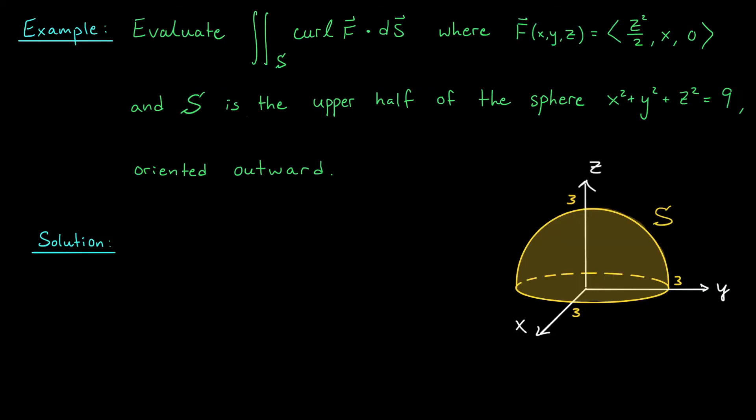Okay, let's check out an example so you can see Stokes' theorem in action. Here, we're looking to evaluate the surface integral of the curl of F, where here F is this vector field, and we're integrating over S, the upper half of the sphere x² + y² + z² = 9, oriented outward. Okay, well, if we're going to use Stokes' theorem, we know that we can trade this surface integral, the surface integral over S of curl of F,